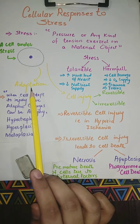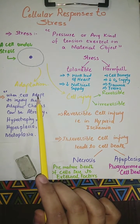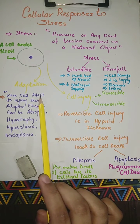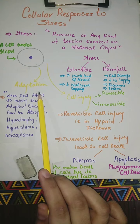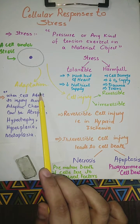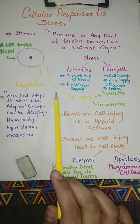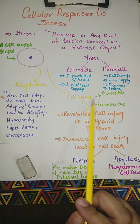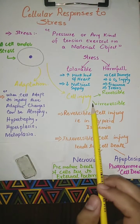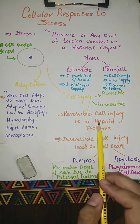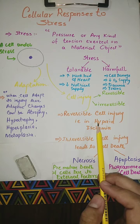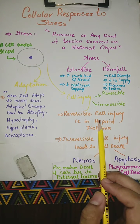This is an example of a cell under stress. The cell undergoes adaptation, achieving a new steady state, preserving viability and functions. If the adaptive capability is exceeded, or if the external stress is inherently harmful or excessive, the cell develops cell injury. Cell injury is of two types: reversible and irreversible. When within certain limits, injury is reversible and the cells return to their stable baseline.